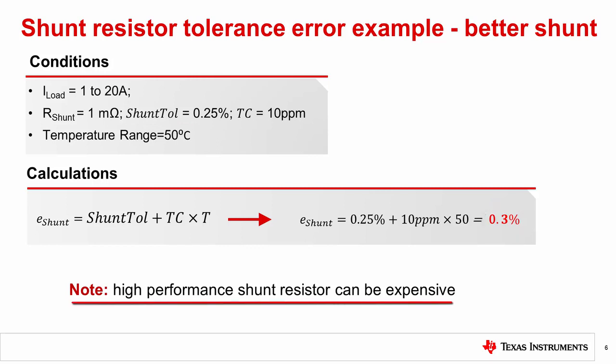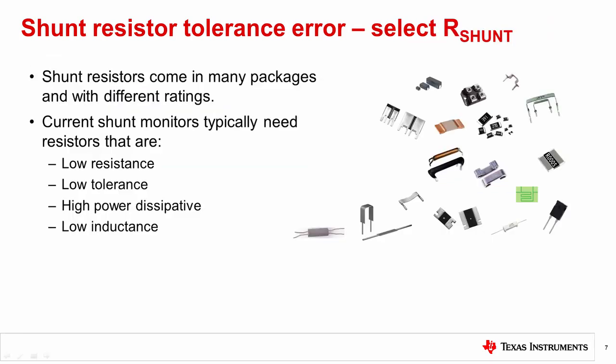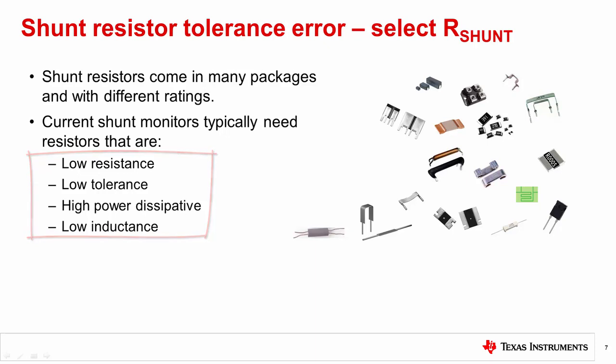It should be noted that high performance shunt resistors can be significantly more expensive. There are a variety of shunt resistors available for current sensing applications. The most common use cases involve low resistance, low tolerance, high power resistors to handle tens of amps with little voltage drop from the supply. Larger resistors can give a better signal at the low end of the dynamic range where offset error dominates, but smaller resistors can give less voltage drop and dissipate less power, often making them the better choice for applications measuring large current.